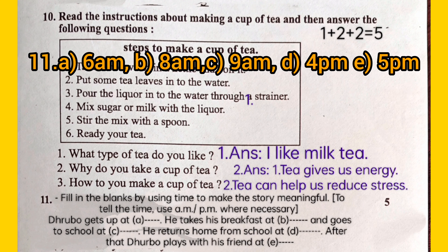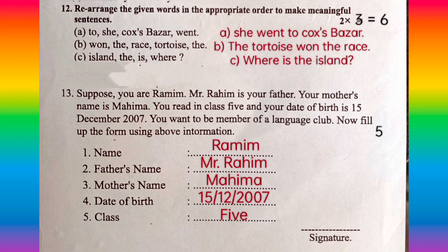He gets up at 6 a.m. He takes his breakfast at 8 a.m. and goes to school at 9 a.m. He returns home from school at 4 p.m. After that, he plays with his friends at 5 p.m.